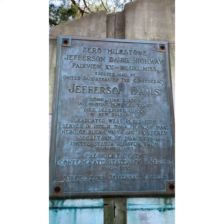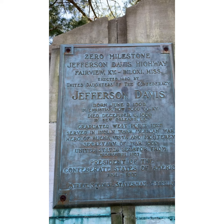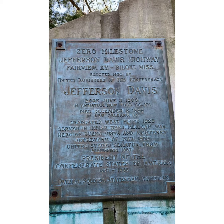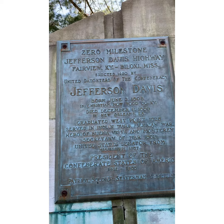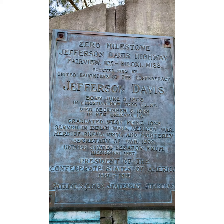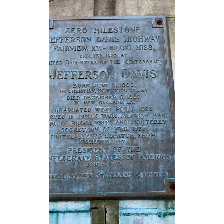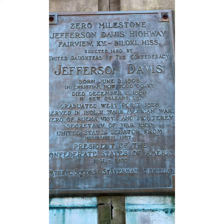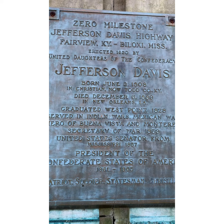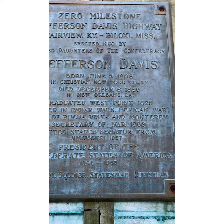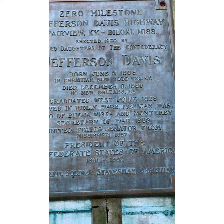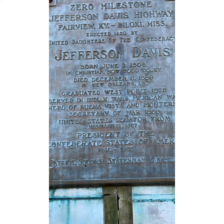I found this placard which tells us a little more about Jefferson Davis. This is a zero milestone — Jefferson Davis Highway — Fairview, Kentucky to Biloxi, Mississippi. It was erected in 1930 by a group called the United Daughters of the Confederacy, who are descendants of people who fought in the Confederacy. It says Jefferson Davis, born June 3rd, 1808, in now Todd County, Kentucky — so he's local. He died December 6th, 1889, in New Orleans. Graduated West Point Military Academy, served in the Indian Wars and the Mexican War. He was a hero of Buena Vista and Monterey. He was Secretary of War in 1853, United States Senator from Mississippi in 1857, and then president of the Confederate States of America from 1861 to 1865.